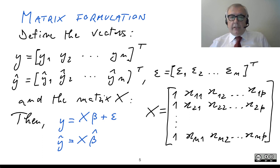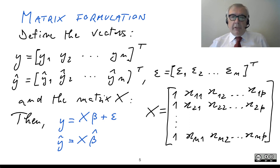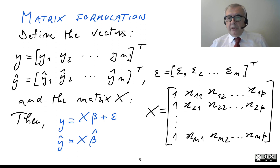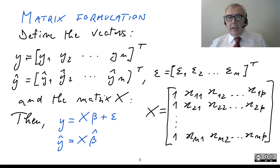These are three examples. In order to introduce the model and predictor in matrix formulation, we define some vectors. We start with the vector of observations: we take all the observations of the training set and put them in an N-dimensional vector.